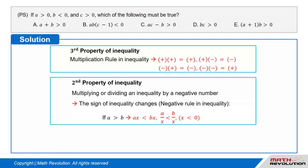The second property of inequality: multiplying or dividing an inequality by a negative number changes the direction of the inequality sign — the negative rule of inequality. That is, if A is greater than B, then A times X is less than B times X, and A over X is less than B over X, where X is less than 0.